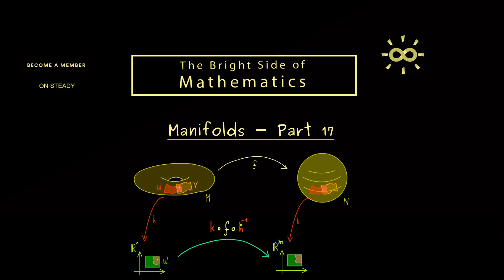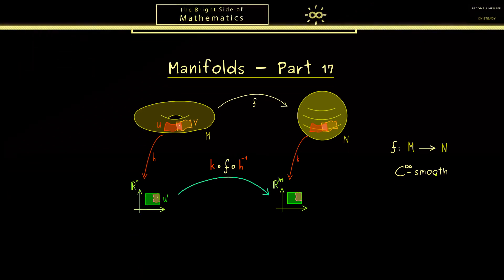So for example here, the manifold on the left hand side has dimension n and the manifold N on the right hand side has dimension m. And then with this, you already know, we can define so called C infinity smooth maps between manifolds. And now today, we will look at examples.